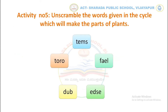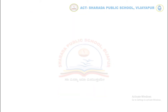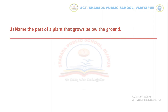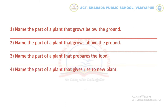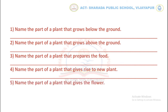Let's move to activity number five. Here you have to unscramble the words given in the cycle, which are related to the parts of a plant. Use these words to answer the questions: Name the part of a plant that grows below the ground. Name the part that grows above the ground. Name the part that gives rise to a new plant. Name the part that gives the flower.